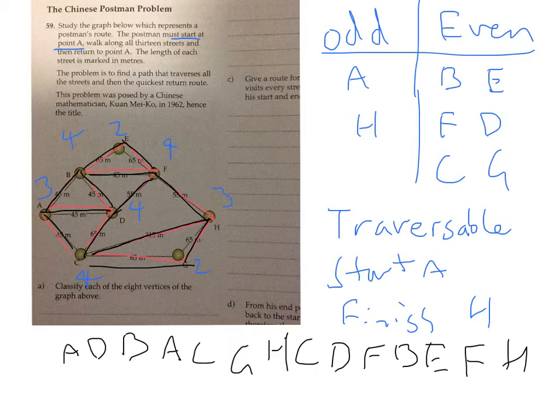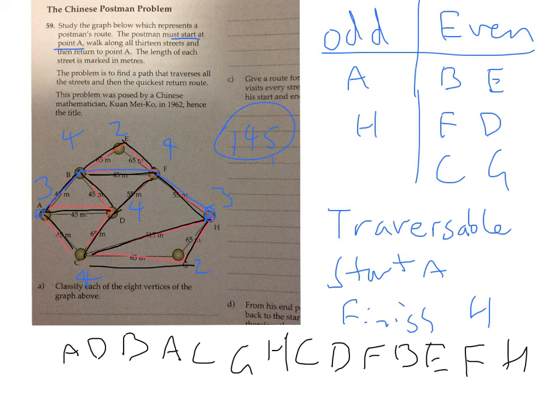The last part asks for the quickest way to get back to A once you've reached H. So from H, we need the shortest path back to A. The network is small enough to use trial and error. Going that way is 55, and from there back that way is 45, and 45 again. So we've got 45 plus 45 plus 55, which is 90 plus 55 = 145. That's the shortest path back.